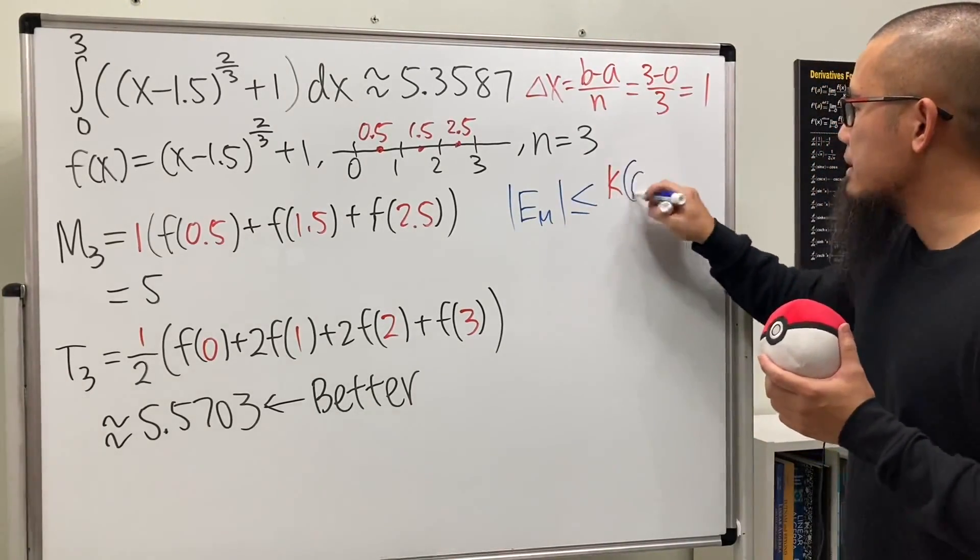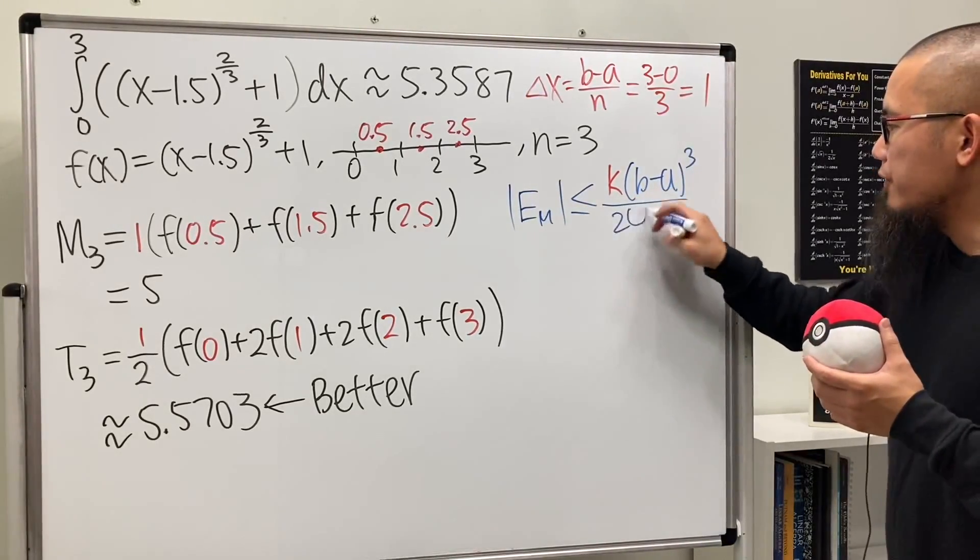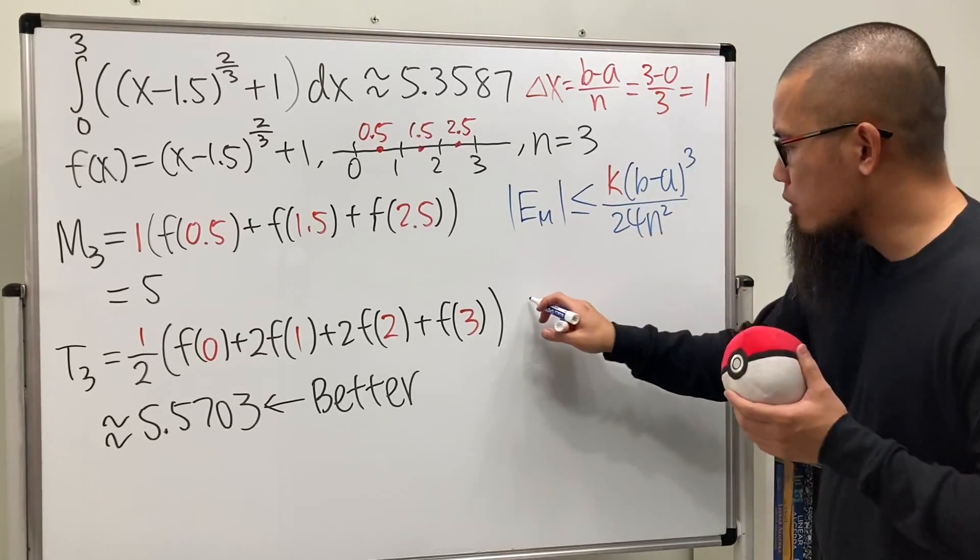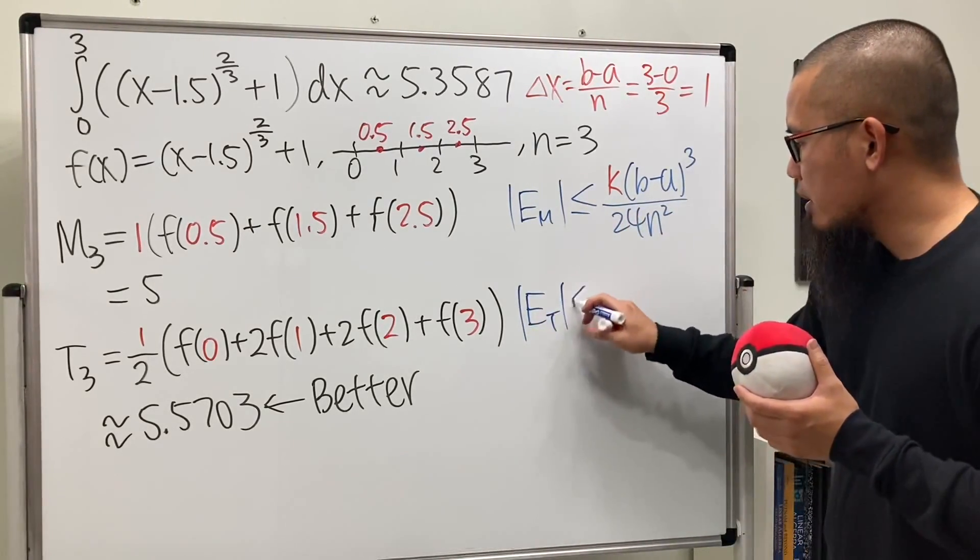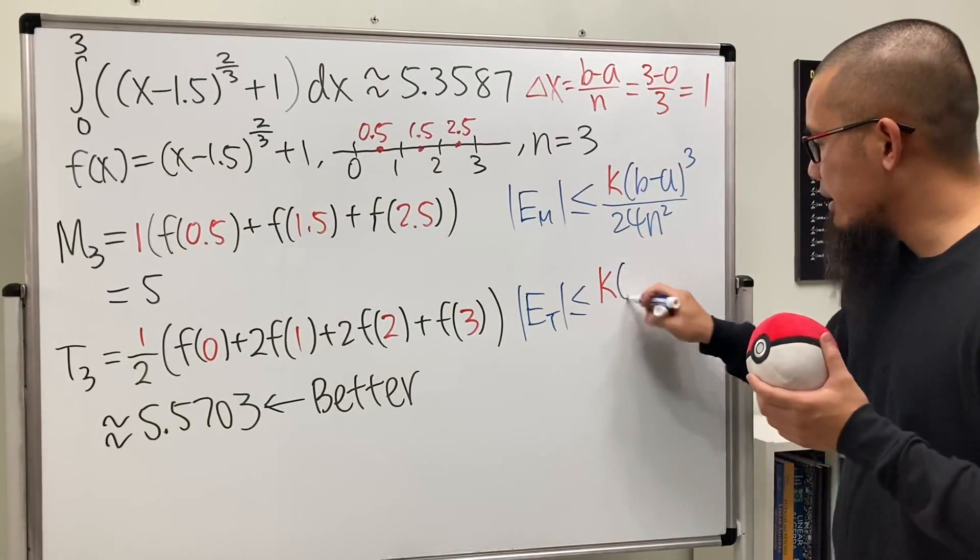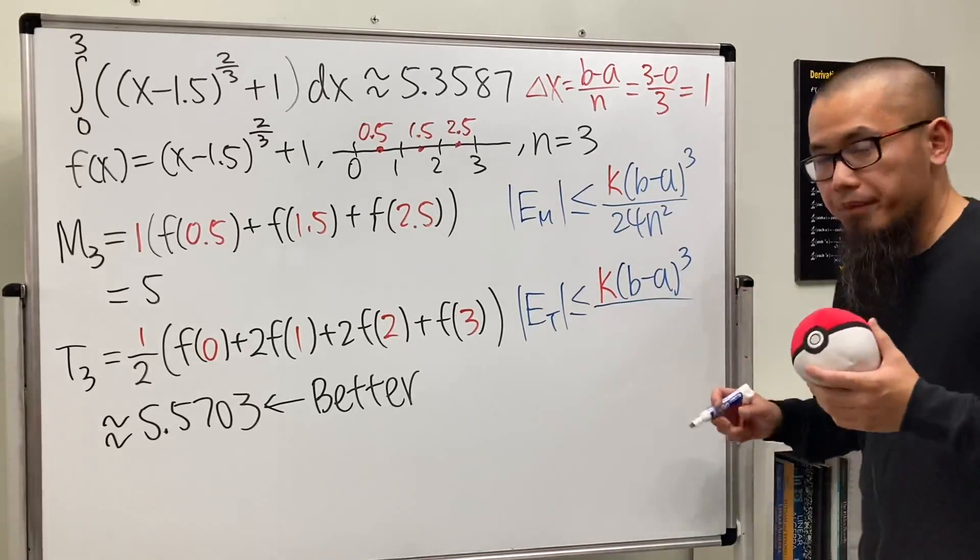For the midpoint rule, the absolute value of EM is less than or equal to K times (b - a)³ over 24n². For the trapezoidal rule, ET is less than or equal to the same thing—K and (b - a)³—but over 12n² instead of 24.